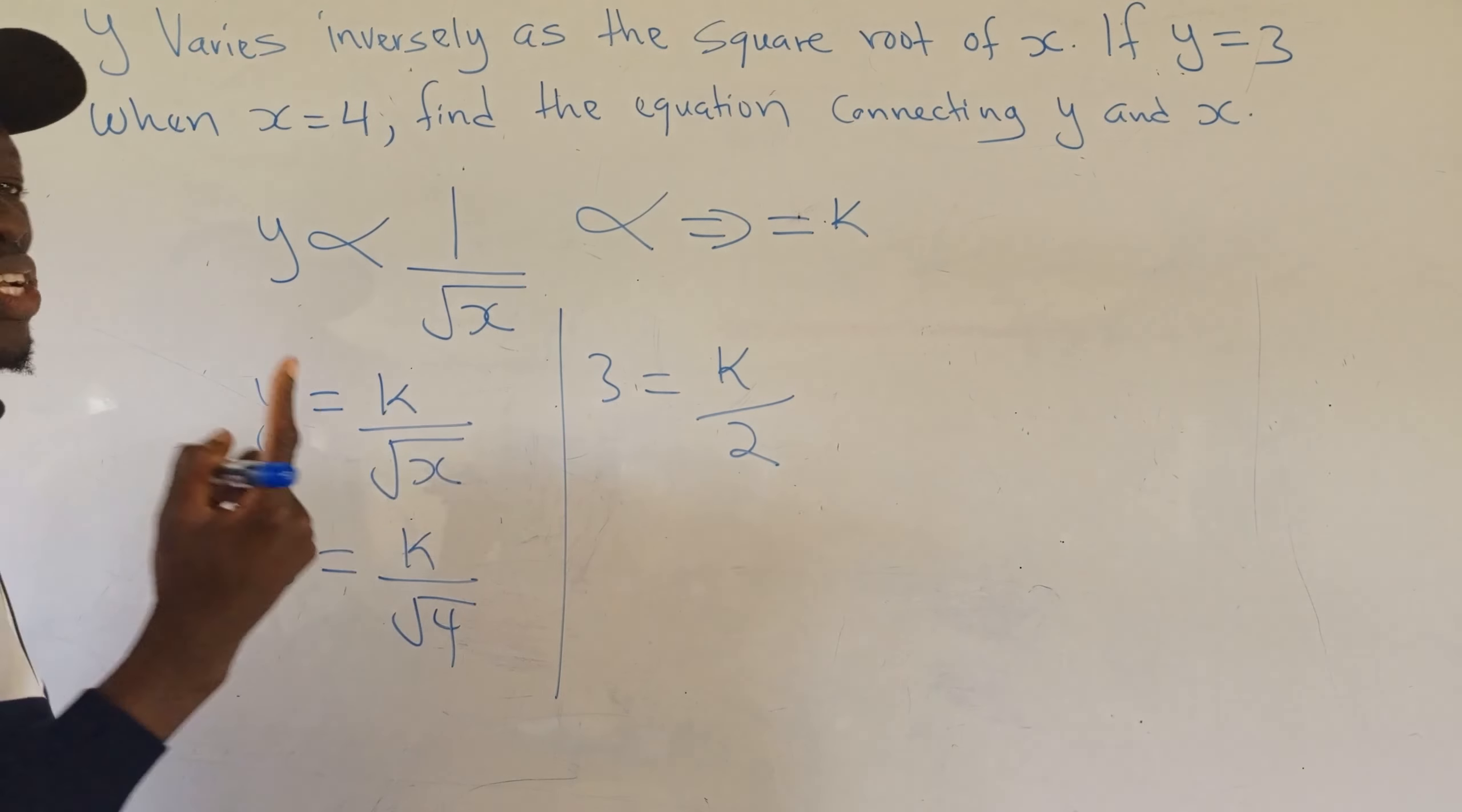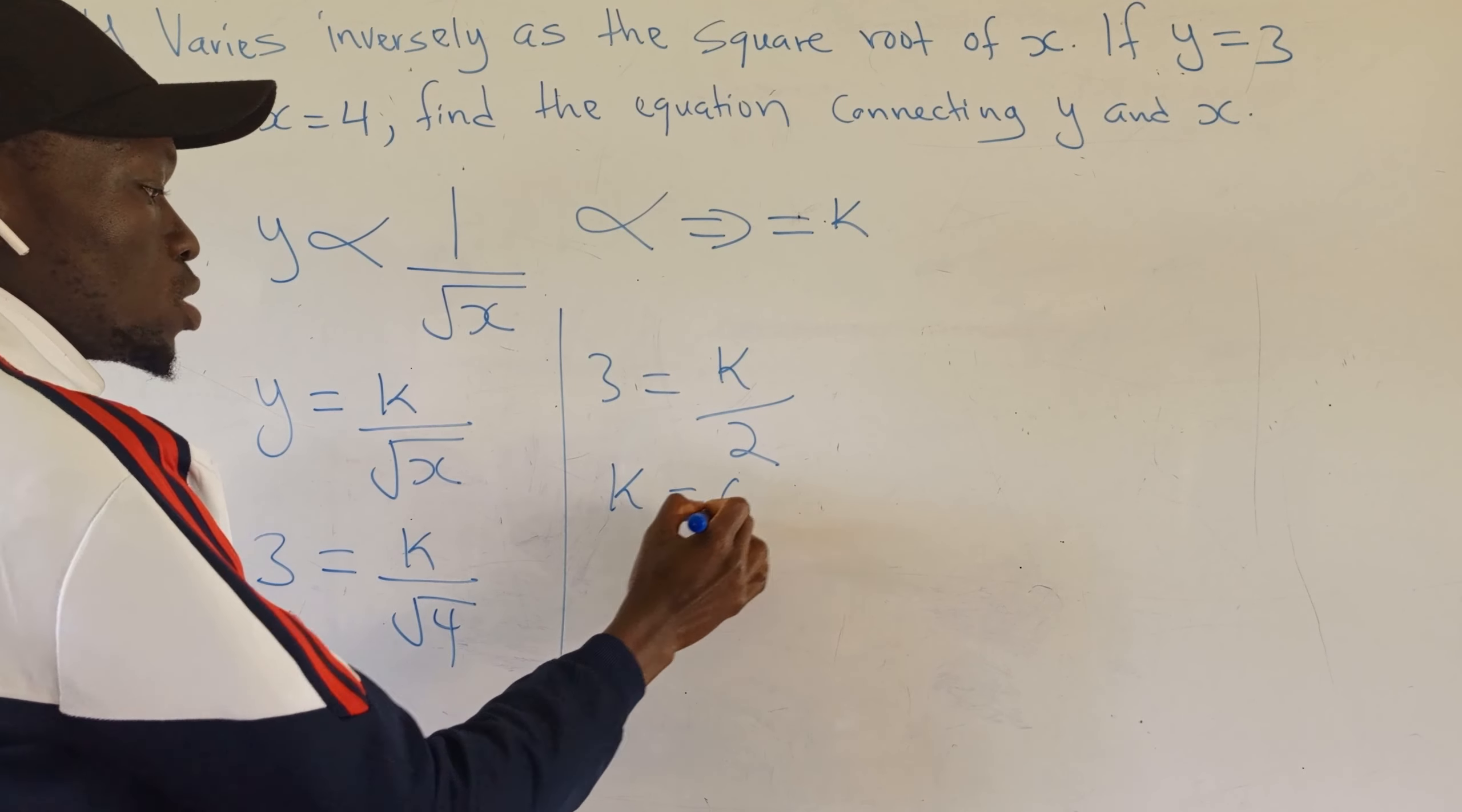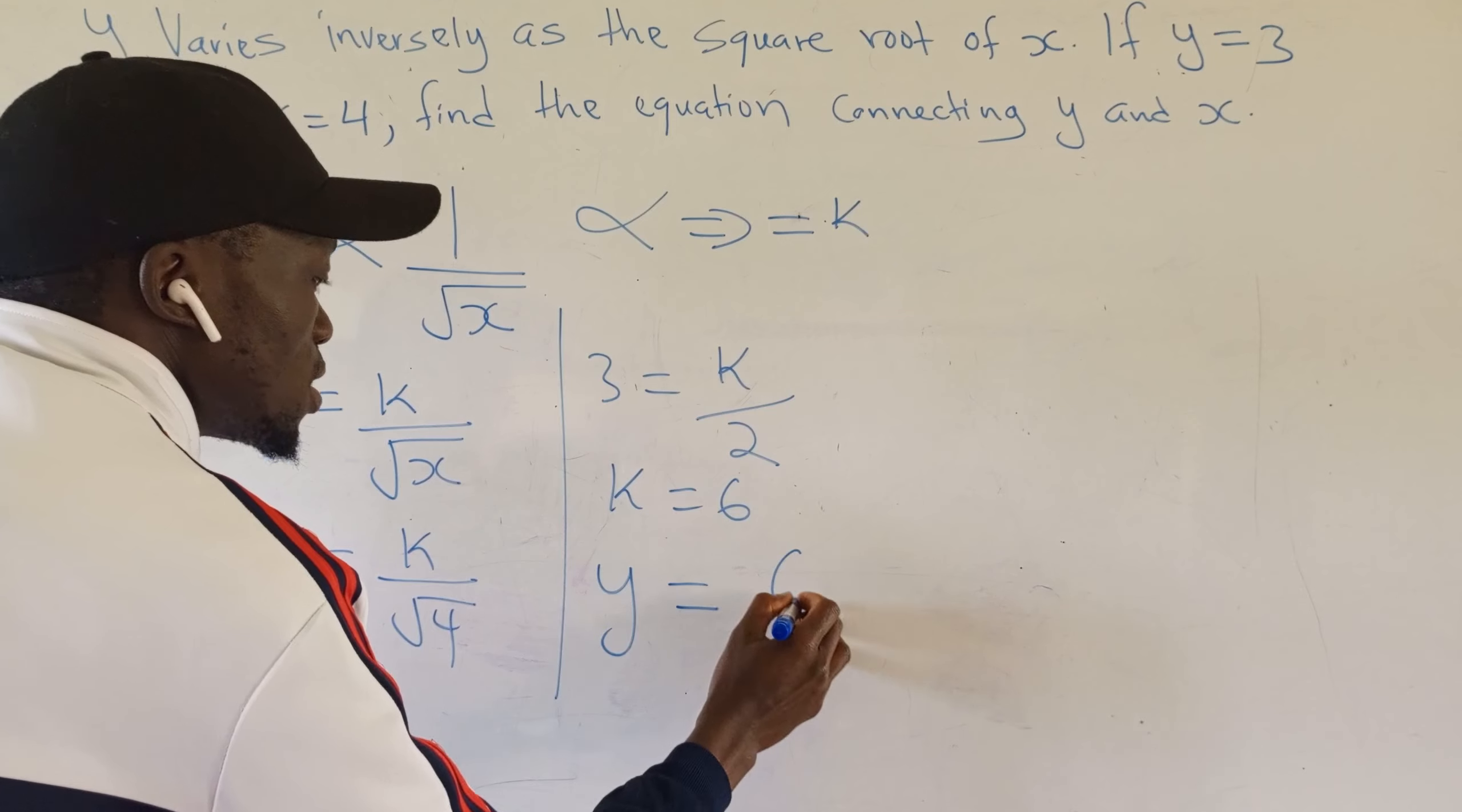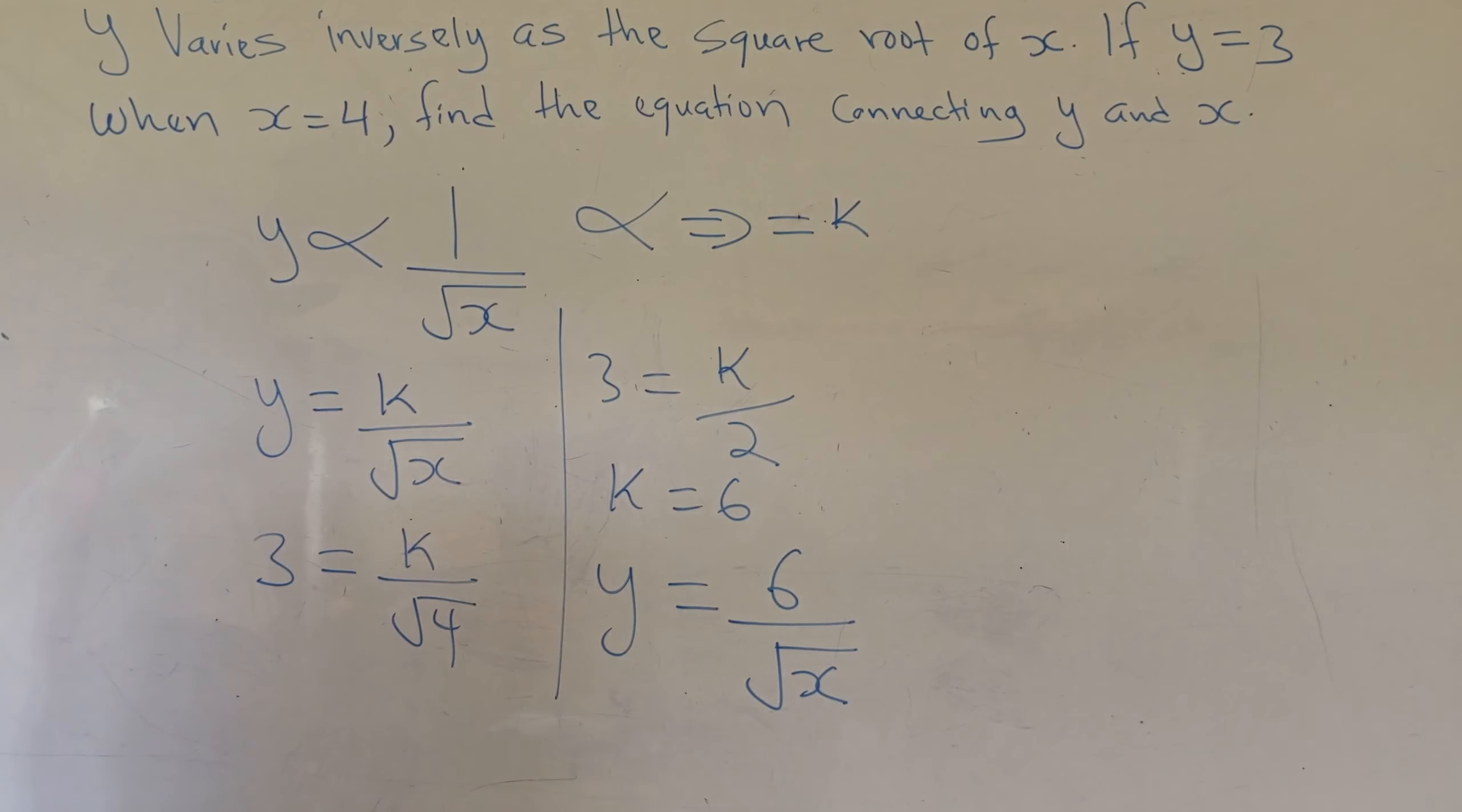The square root of 4 is 2. So to get k, we multiply both sides by 2 and k will equal 6. Therefore, the equation connecting y and x will be y equals 6 divided by the square root of x. And that is the answer.